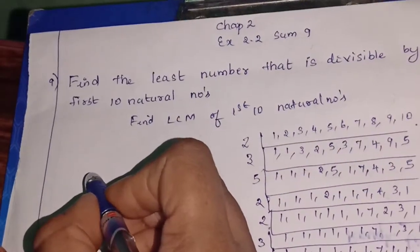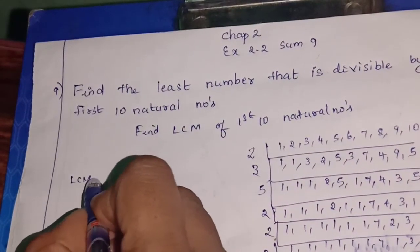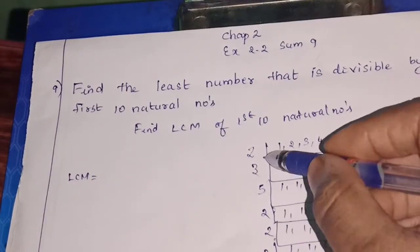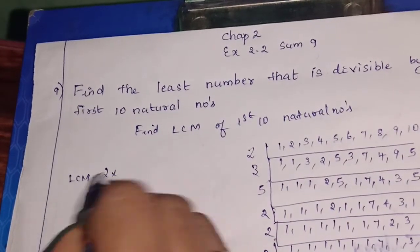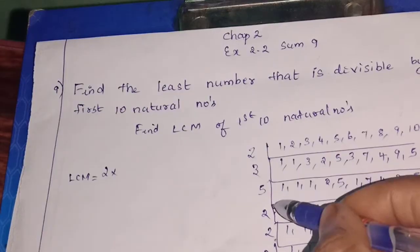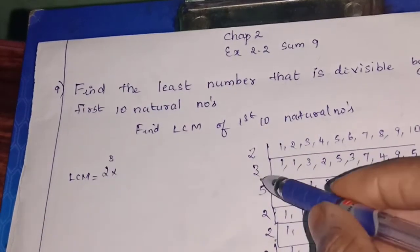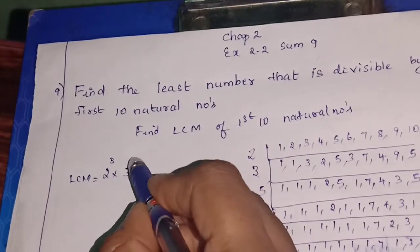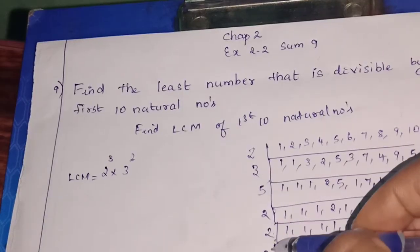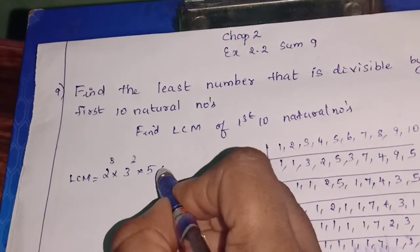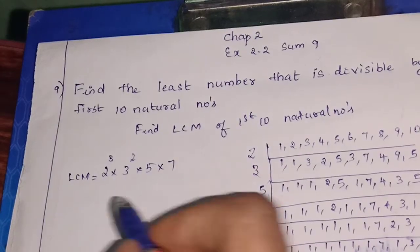So LCM is what? LCM is equal to multiply everything. 2 into, how many 2's? 2, 3 - 2's, 2 cube into, how many 3's? 3 square, 2 - 3's. Next how many 5's? 1 - 5 into 5 into 7, only 1 - 7.